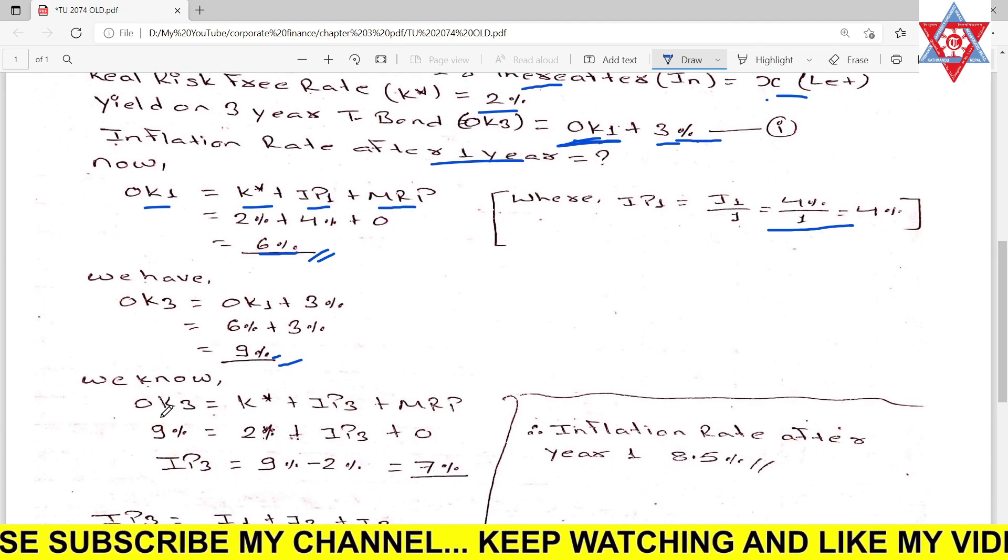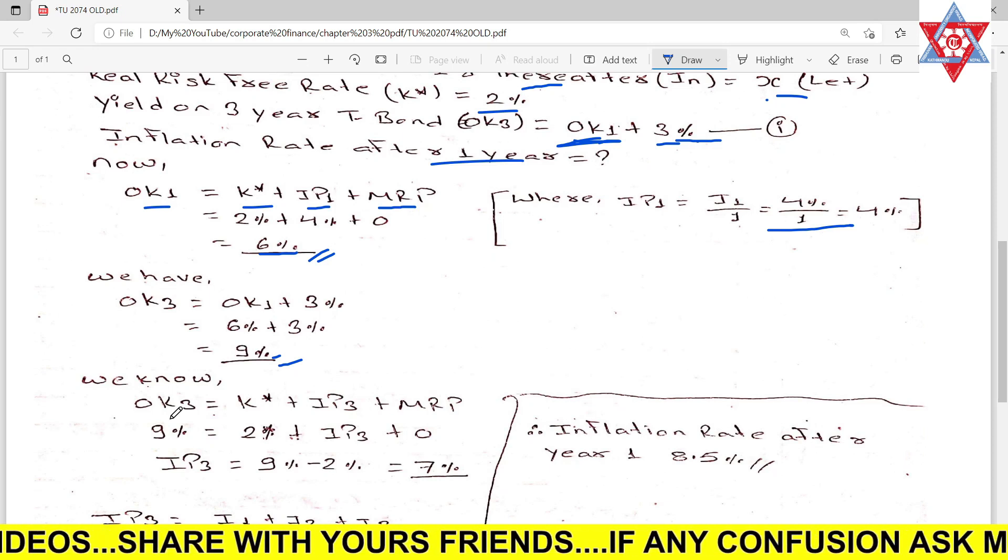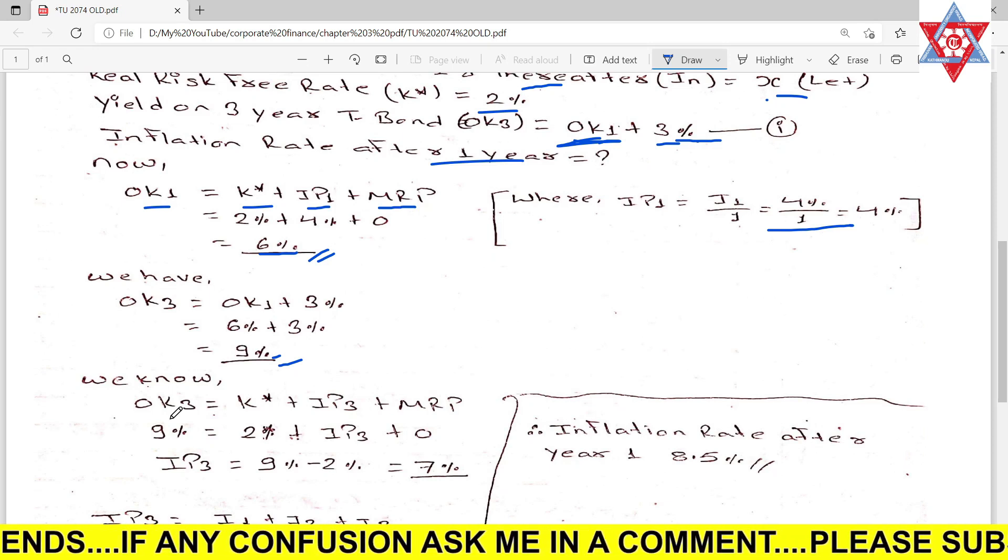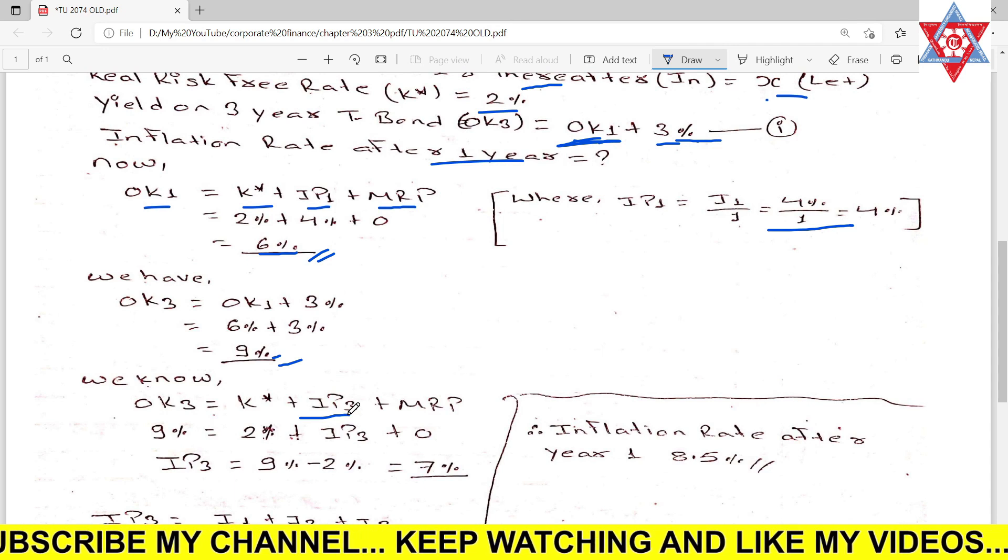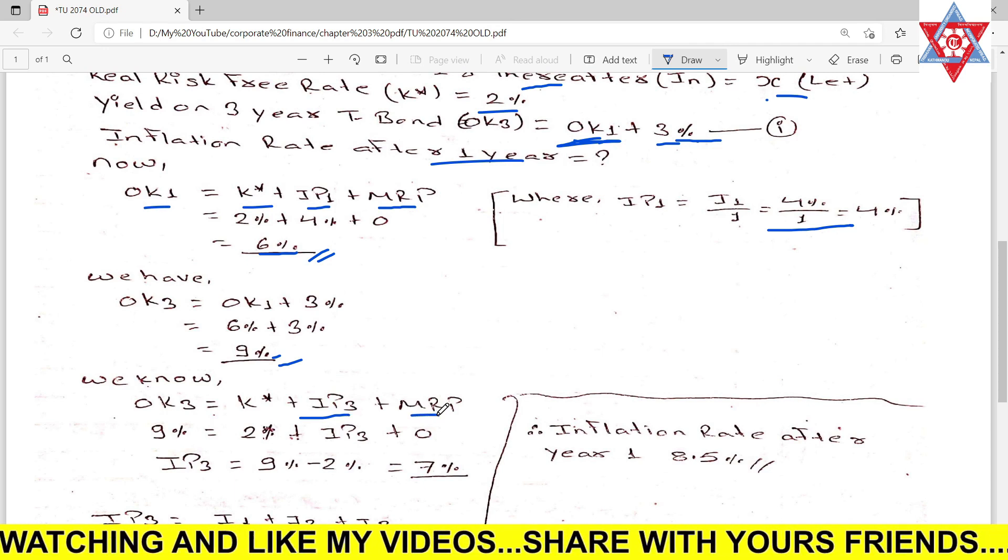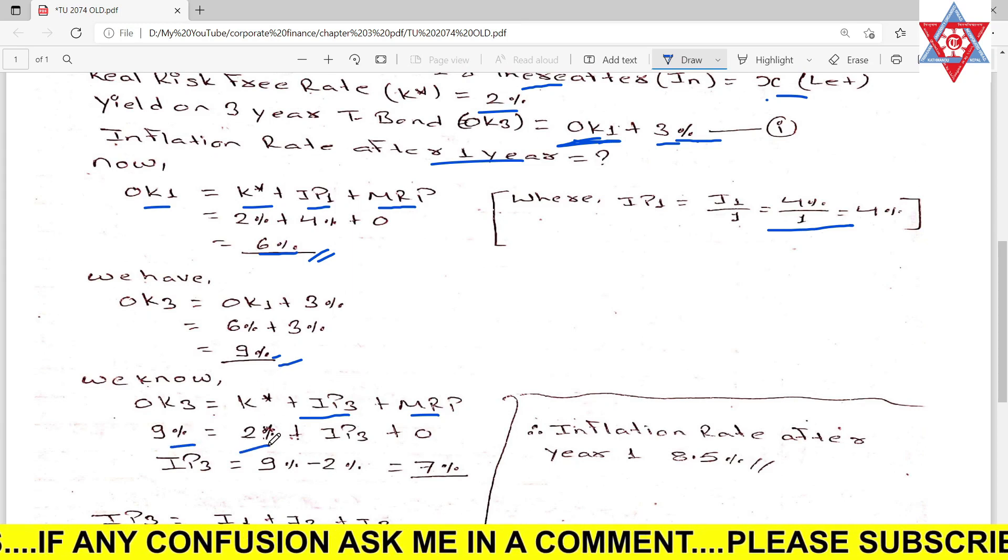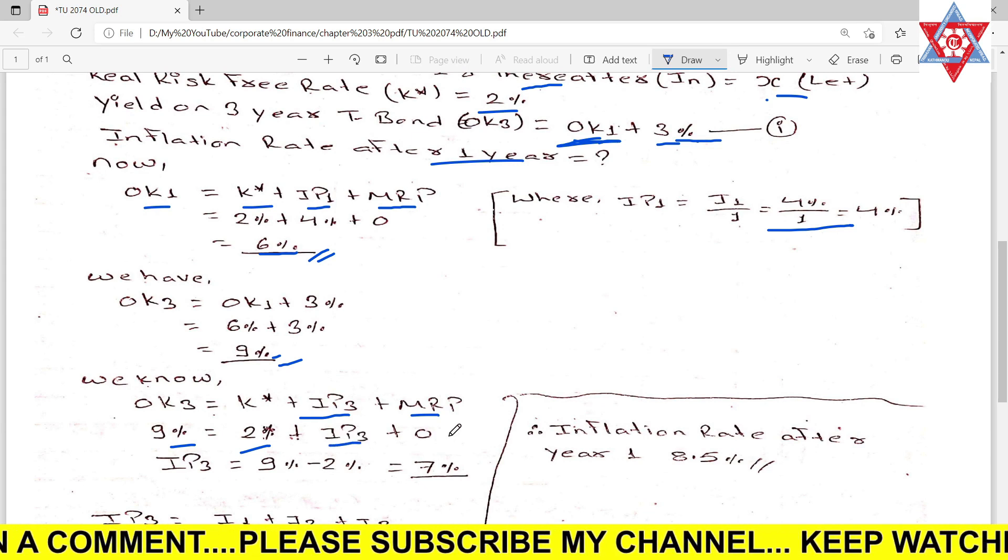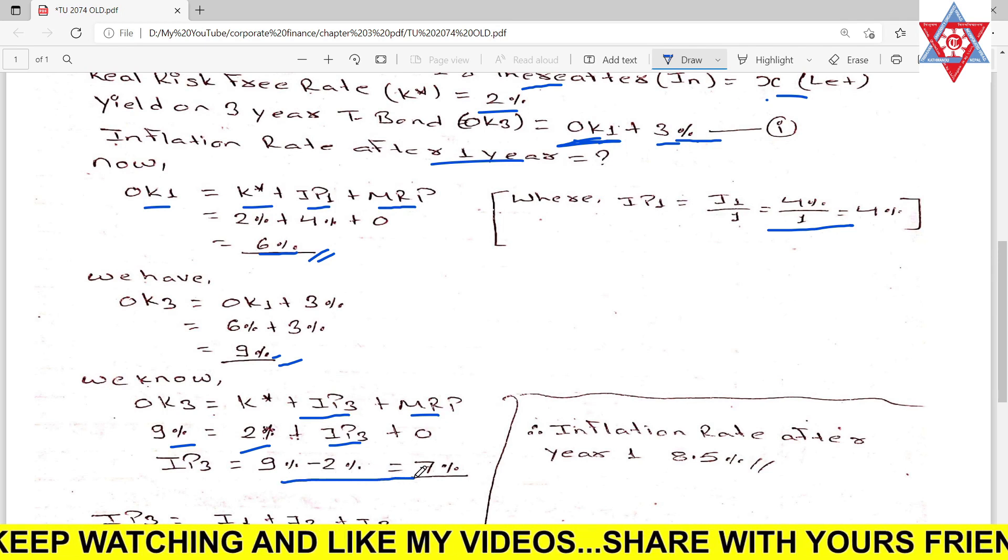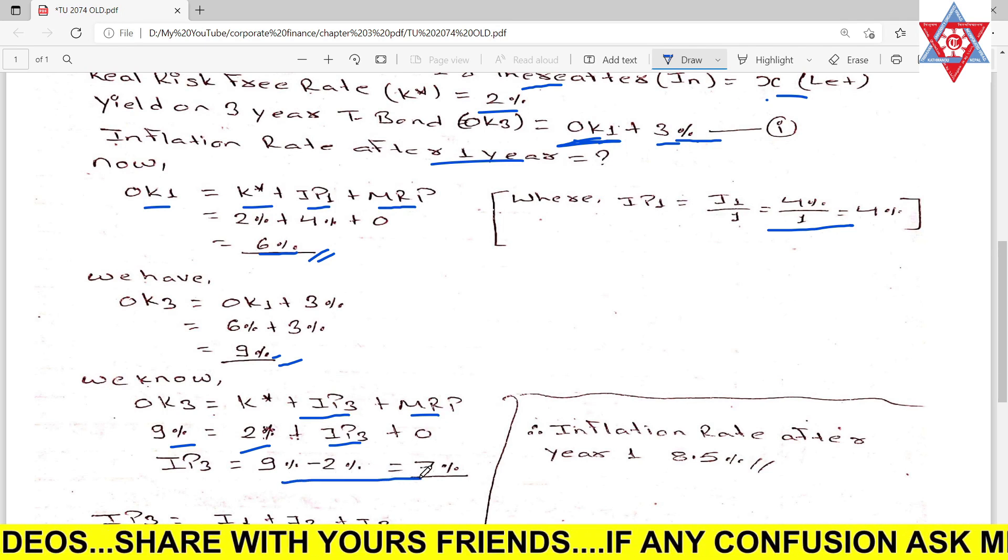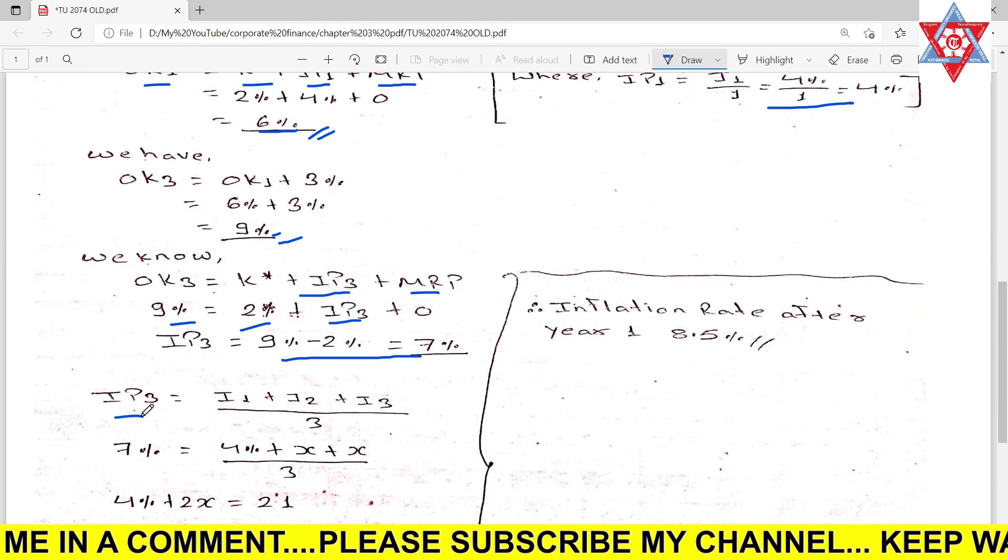Zero K₃ formula is K* plus IP₃ plus MRP. Zero K₃ is nine percent, K* is two percent, so IP₃ inflation premium is seven percent.